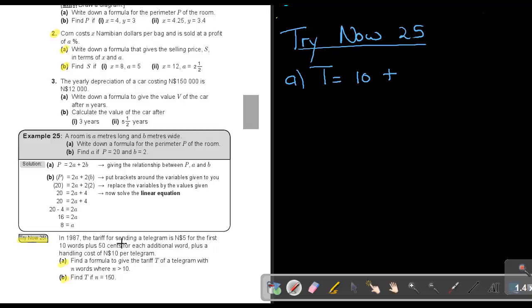it's going to be the 10 handling fee, plus every word is 50 cents, but if I make it dollars, it's 0.5 dollars. So it's 0.5 multiply the number of words, which is N. So the formula is T equals 10 plus 0.5N.